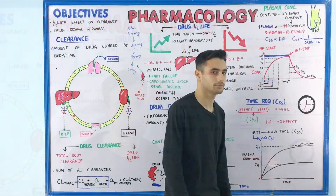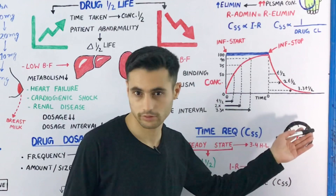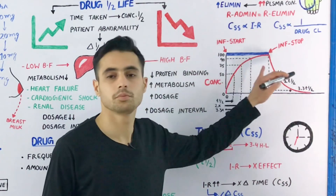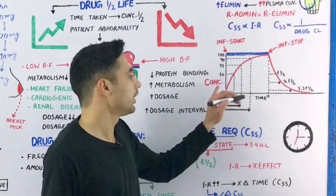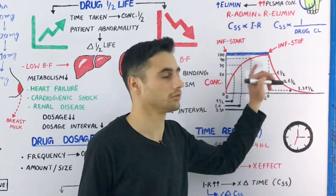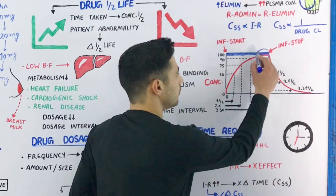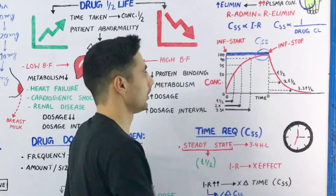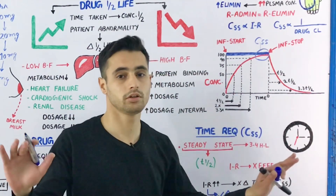Have a look at this graph — time on the x-axis, concentration on the y-axis. The blue line represents the start of infusion. When you start infusing, the drug concentration increases gradually until the steady state is achieved. At steady state, the concentration doesn't change. When you stop infusing, the drug concentration decreases gradually until it is completely eliminated from the body.